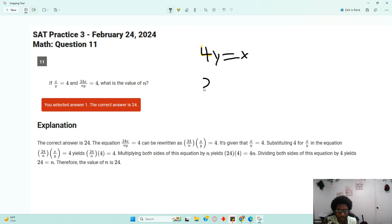Now that we have that information, we can plug in 4y for x over ny. Now that we have that, we can cancel out the y's. And now we have 24 times 4, which is 96. So that'll be 96 over n.